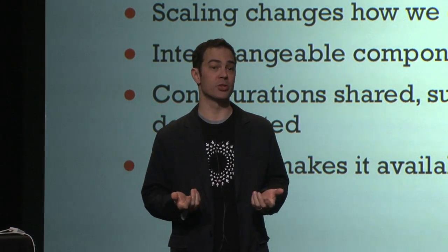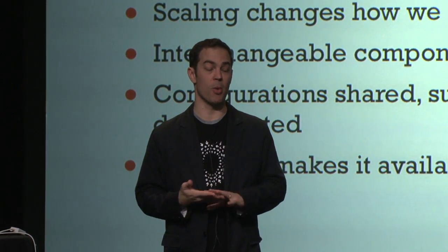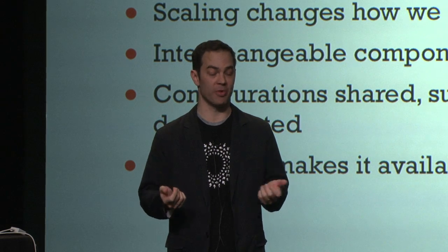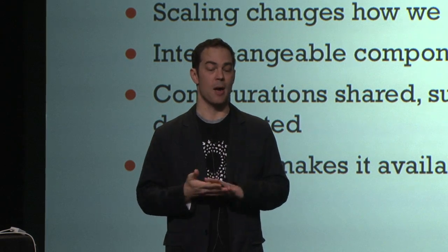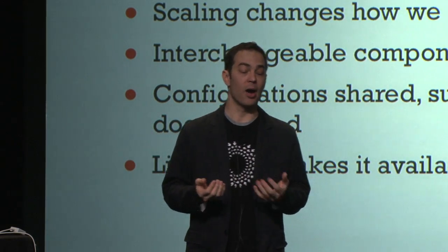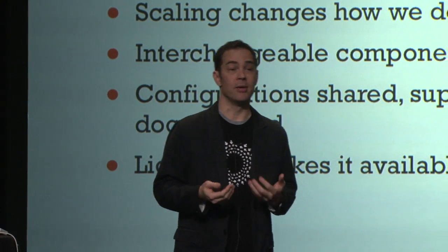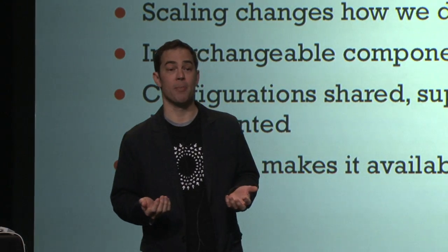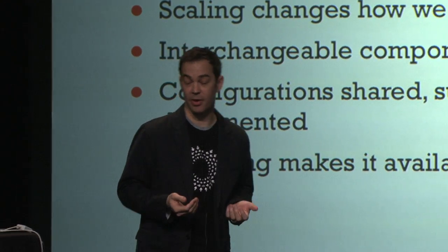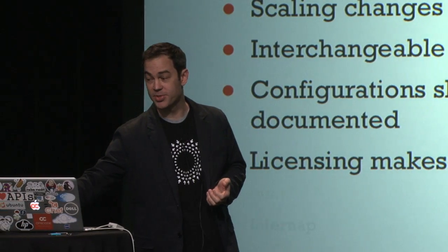OpenStack is built out of interchangeable pieces. Some of them you may want to change out — different databases or different hypervisors. All these things are shared, supported, and documented, and everything is under the Apache license, making it available to everyone to configure this infrastructure themselves.